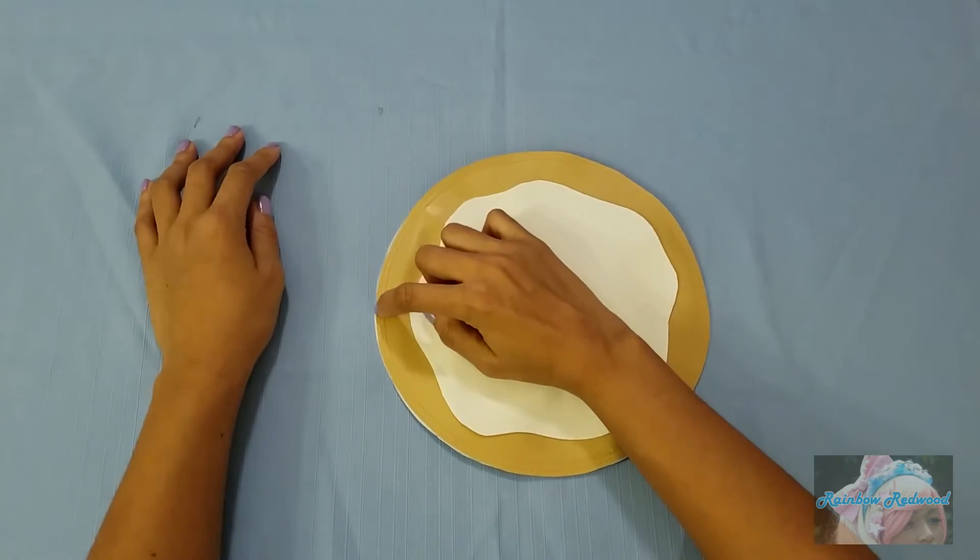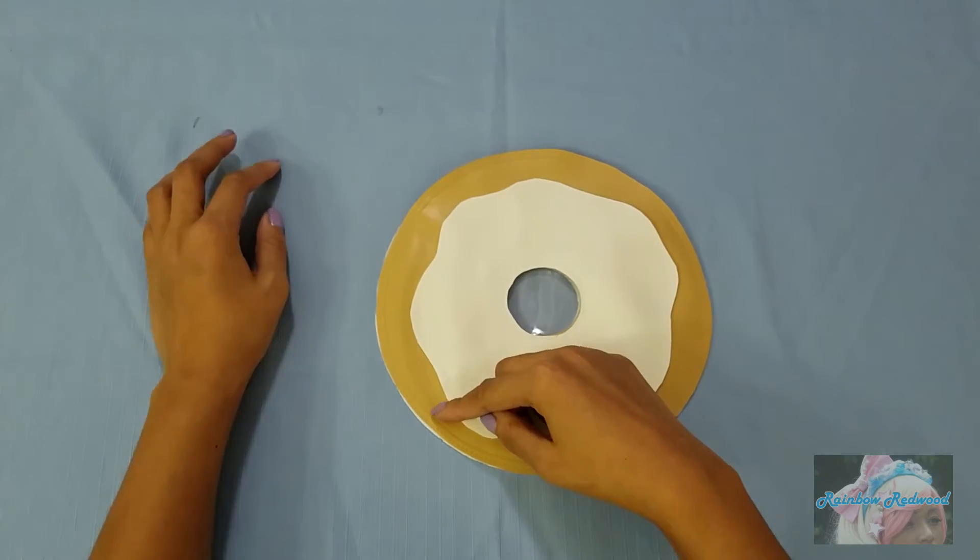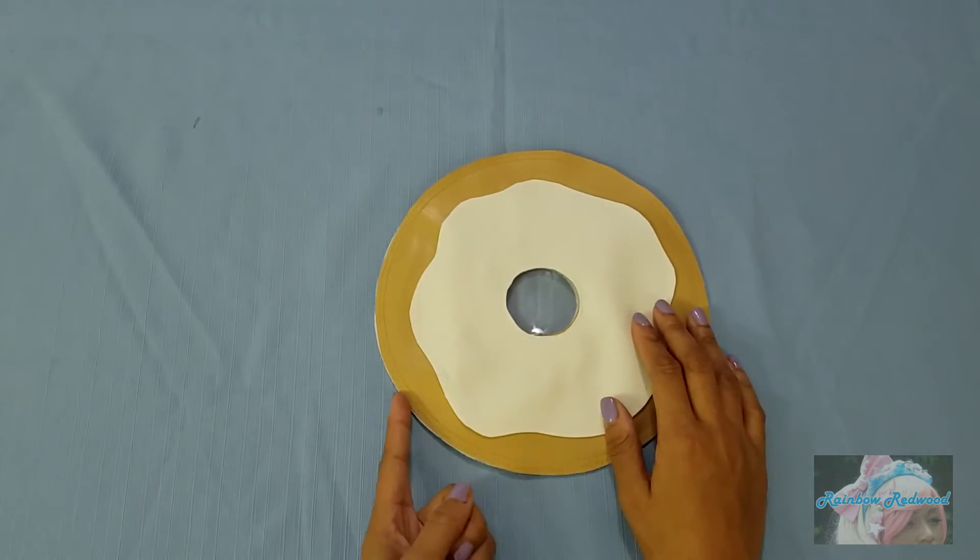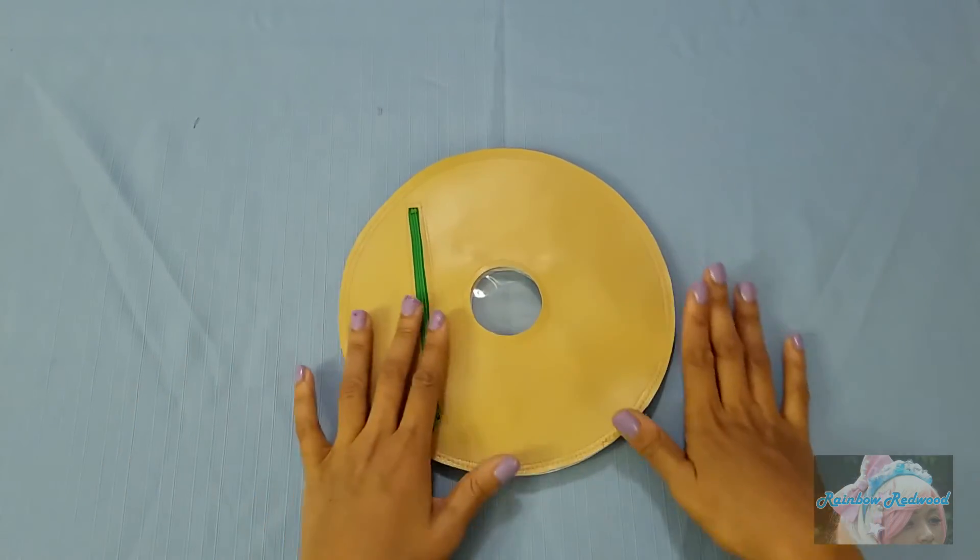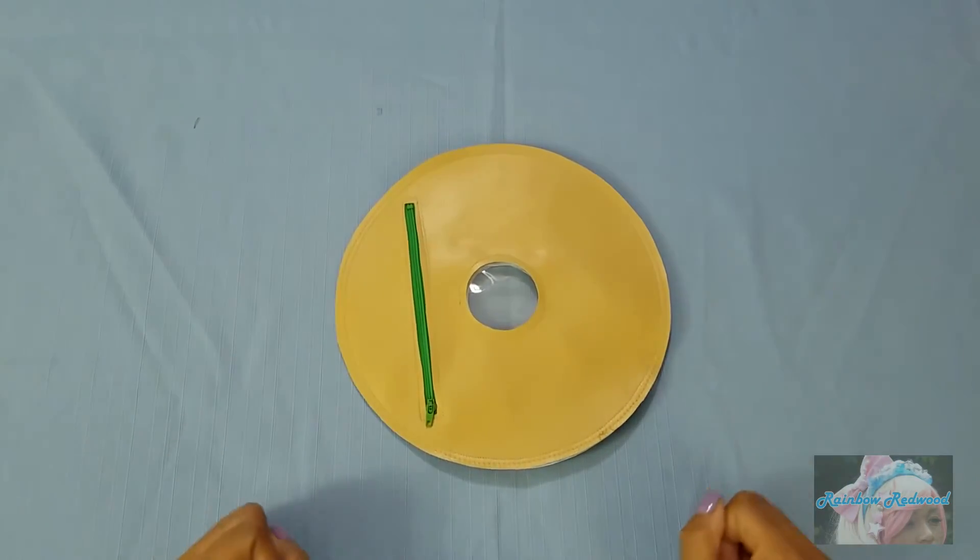But if you lay it flat, you can see there's just a little bit of white peeking out here and there. So you want to just go in and trim that down and then slip it over and see if you see any white peeking out on the other side and trim that as well.